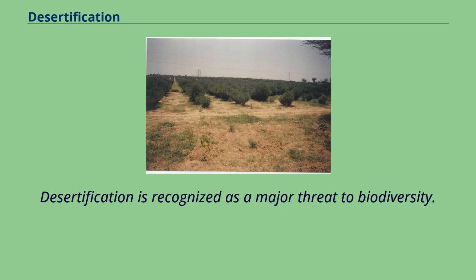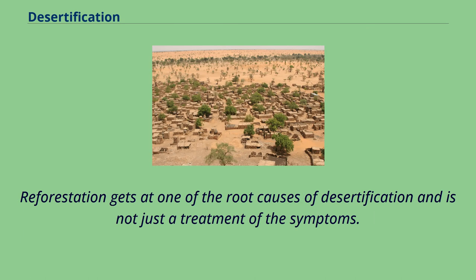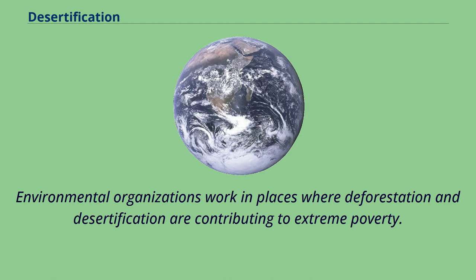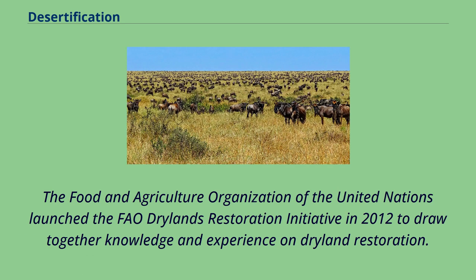Desertification is recognized as a major threat to biodiversity, and some countries have developed biodiversity action plans to counter its effects, particularly in relation to the protection of endangered flora and fauna. Reforestation gets at one of the root causes of desertification and is not just a treatment of the symptoms. Environmental organizations work in places where deforestation and desertification are contributing to extreme poverty, focusing primarily on educating the local population about the dangers of deforestation and employing them to grow seedlings, which are transferred to severely deforested areas during the rainy season. The Food and Agriculture Organization of the United Nations launched the FAO Drylands Restoration Initiative in 2012 to draw together knowledge and experience on dryland restoration.